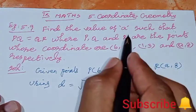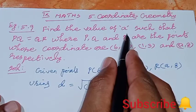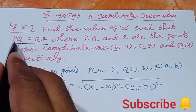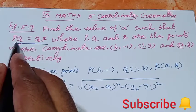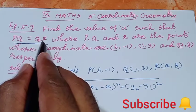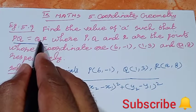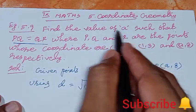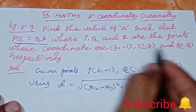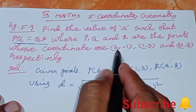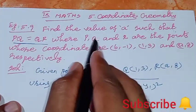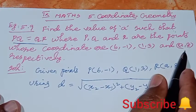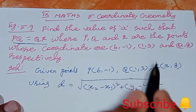Now we find out what the important condition is. The condition is that the distance between PQ and QR must be equal. We have 3 points: P is (6, -1), Q is (1, 3), and R is (A, 8). So these are the given points.